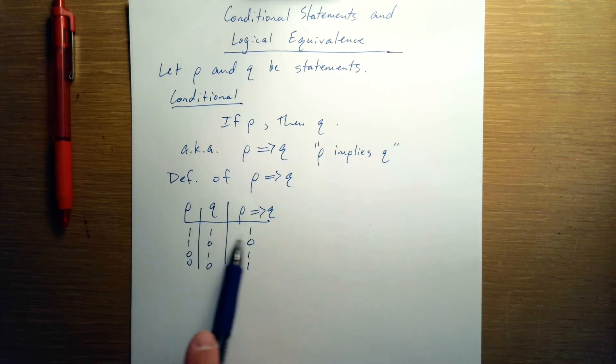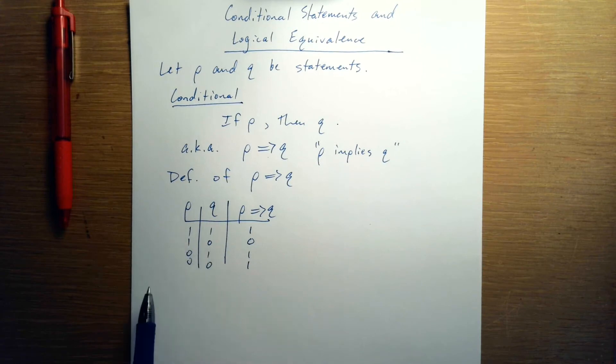When P and Q are both true, the conditional statement itself is true. When P is true and Q is false, the conditional statement is false. And in both other cases, the conditional statement is true. This is not only the truth table of the conditional statement, it's the definition.